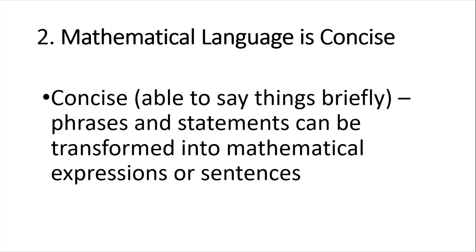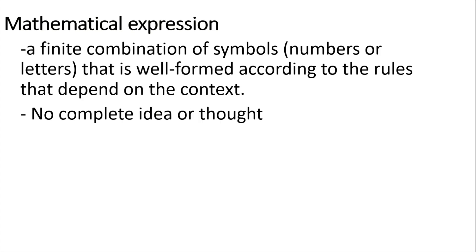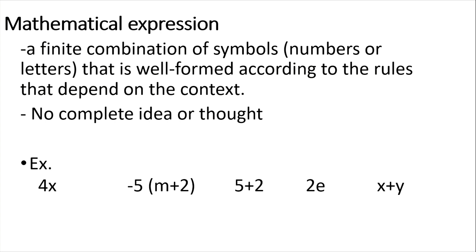Mathematical language is concise, meaning we can say things briefly. Phrases and statements can be transformed into mathematical expressions or sentences. A mathematical expression is a finite combination of symbols, numbers, or letters that is well-formed according to the rules that depend on the context, and it has no complete idea or thought. A mathematical sentence, which we'll discuss later, is the opposite — it has a complete idea or thought. Examples of expressions: 4x, negative 5 times the quantity of m plus 2, 5 plus 2, 2e, and x plus y. All of these have no complete idea or thought.